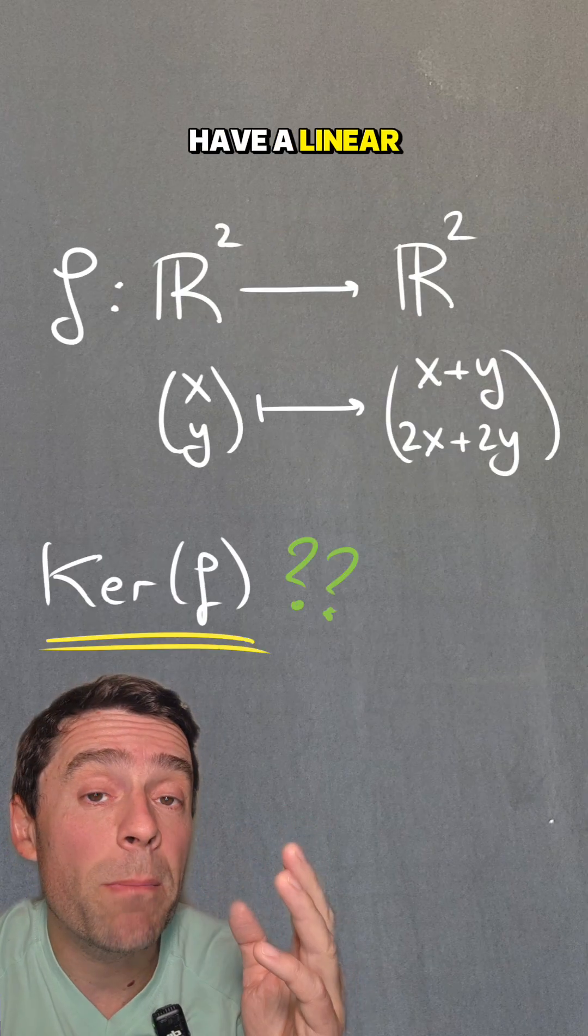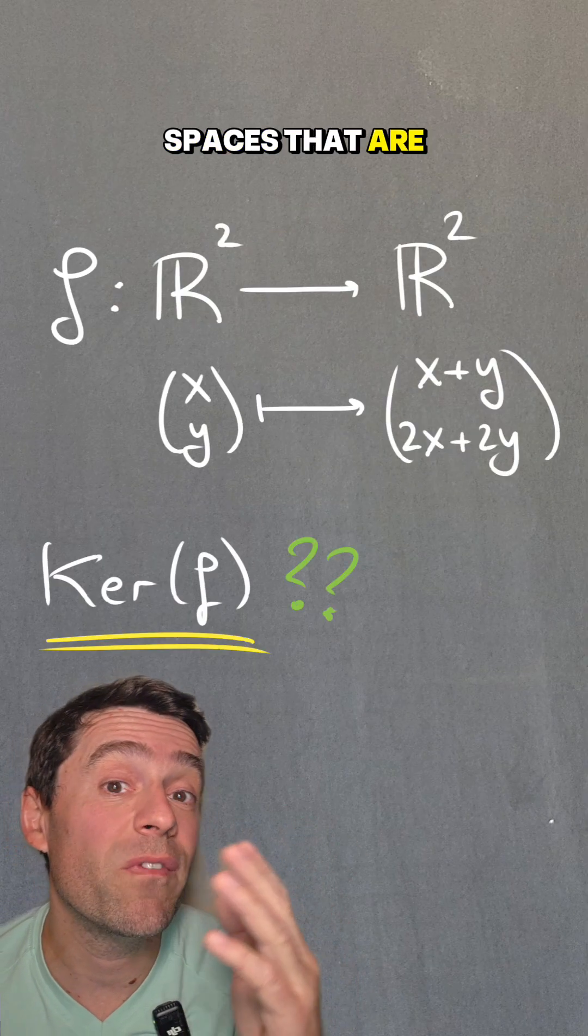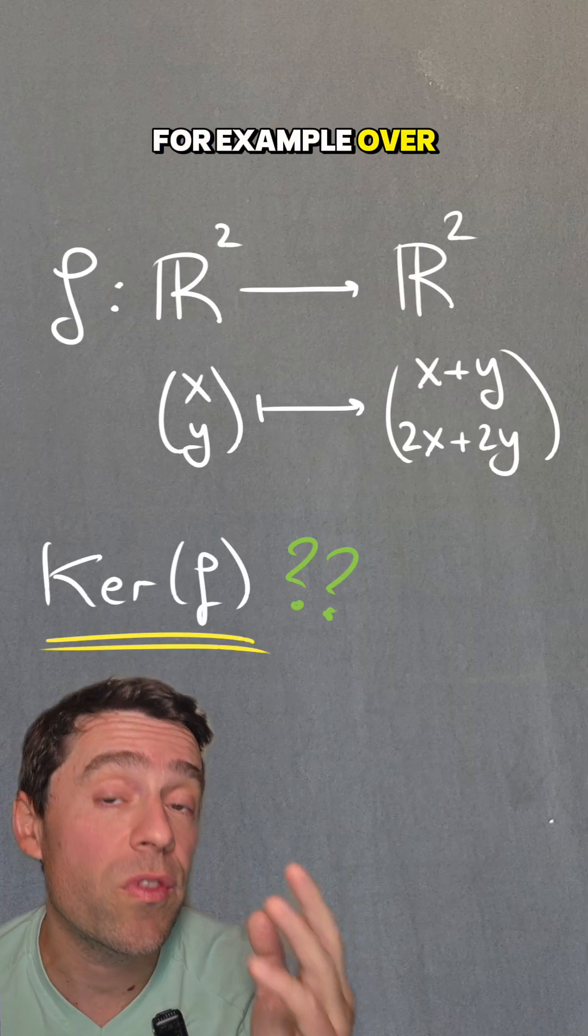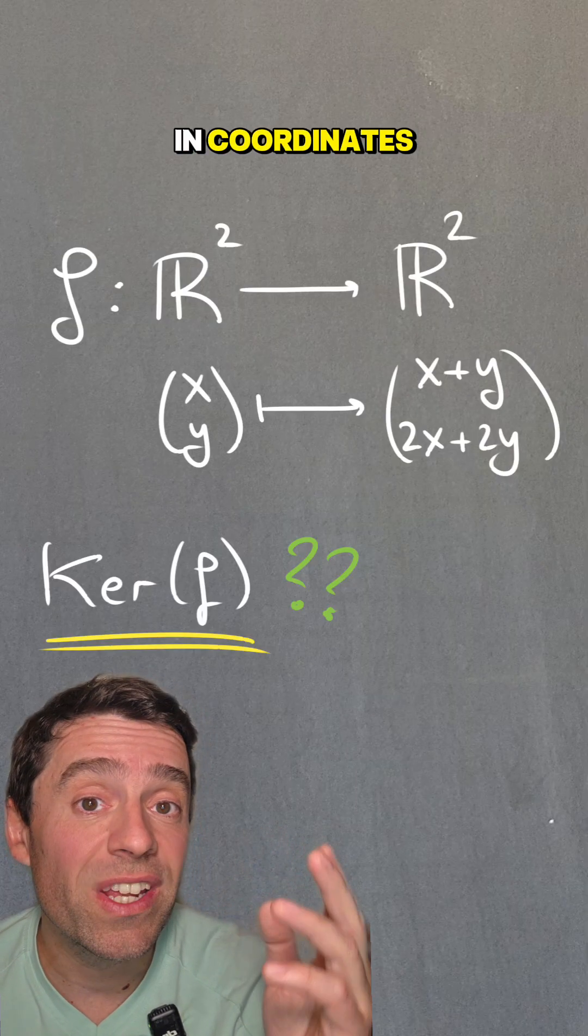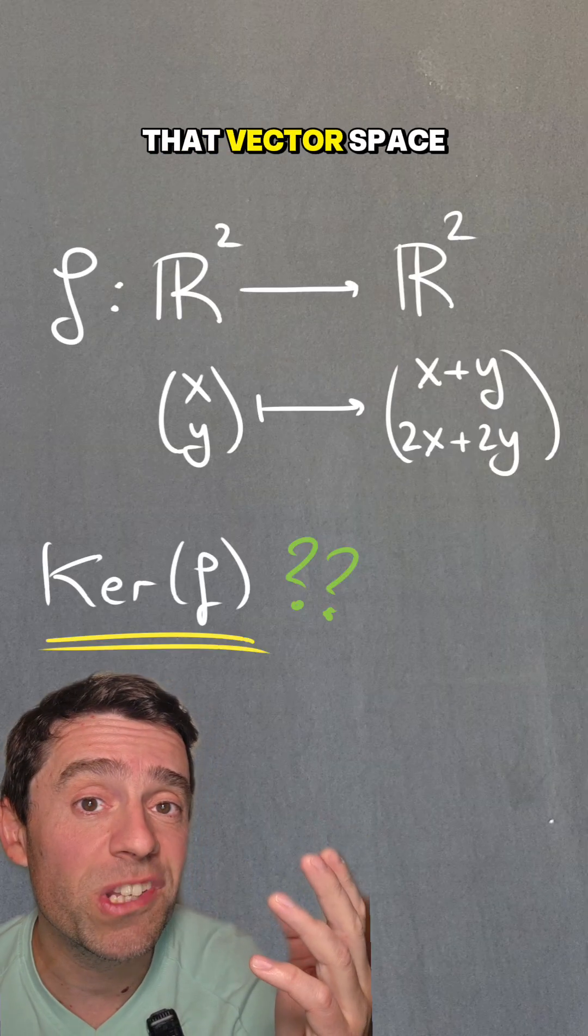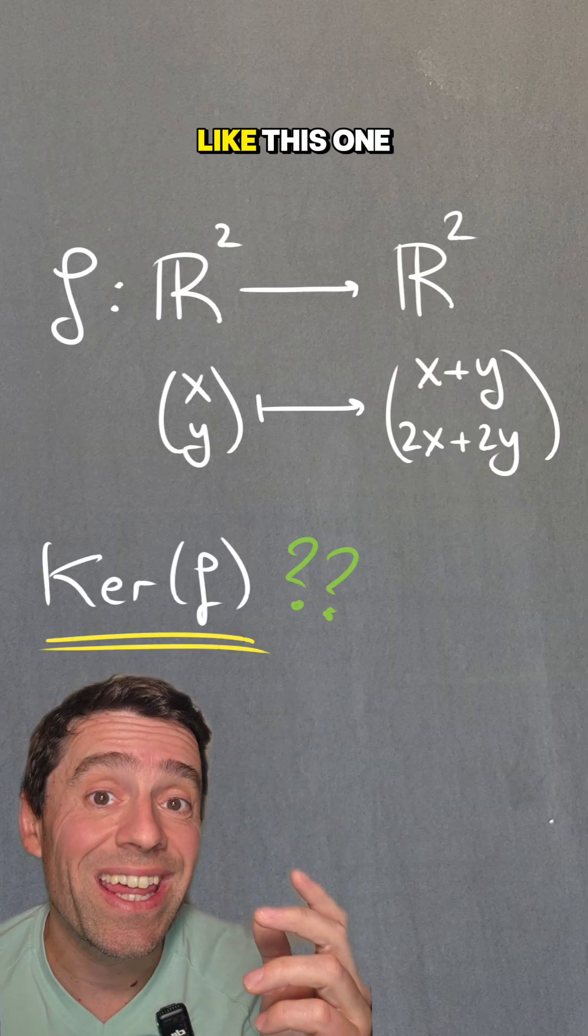Now, if we have a linear map between vector spaces that are finite dimensional, for example over the real numbers, then we're going to be able to put them in coordinates with respect to a basis of that vector space, and they're going to look like this one.